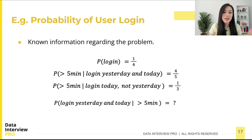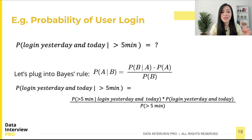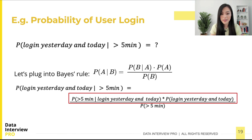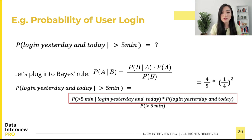Now let's plug our information into Bayes' theorem. Event A is a user logging in both yesterday and today, and event B is a user spending over five minutes on the webpage. The numerator is P(B|A) multiplied by P(A). We calculate it as the probability of spending more than five minutes given they logged in both days — which is 4/5 — multiplied by the probability of logging in both days. Since daily logins are independent, that's (1/4)², so we can compute the numerator easily.